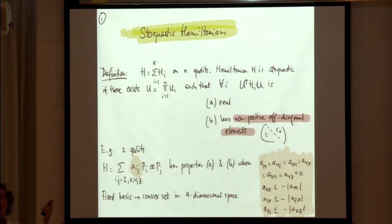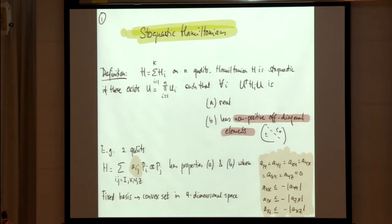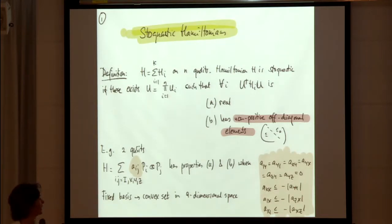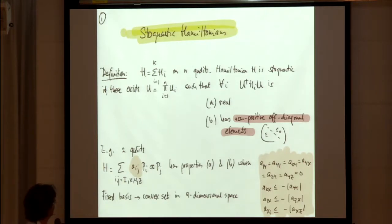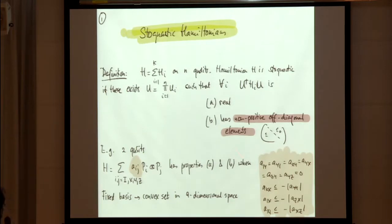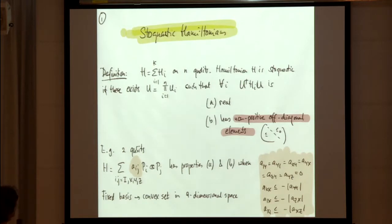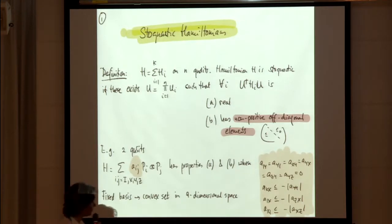A point in this 18-dimensional space represents one class of Hamiltonians all related to each other by local unitaries. In this 18-dimensional space, you want to see where the class of stoquastic Hamiltonians sits. I've puzzled on this problem for the last three weeks — it's not so easy, even for two qubits. Because if I ask when something is stoquastic for many qubits, I have to find a common basis in which every term is real and has non-positive off-diagonal elements, which adds additional complexity.